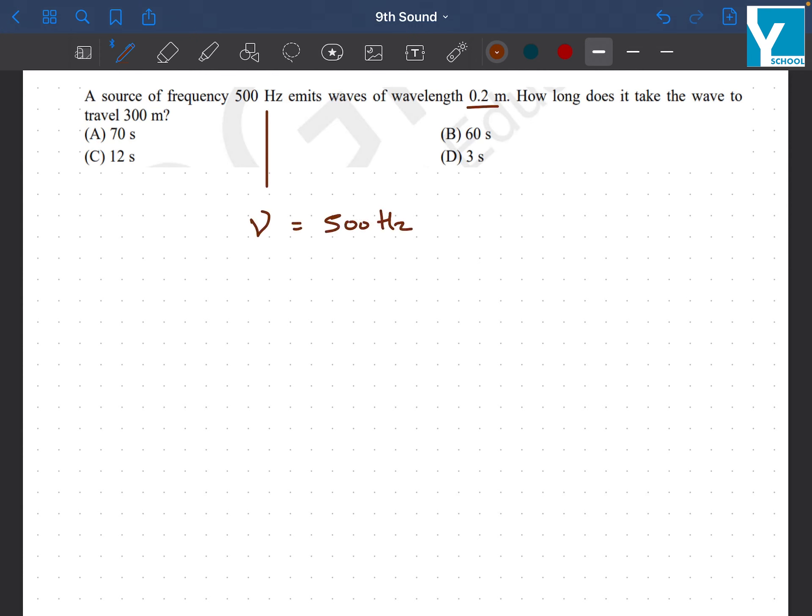So velocity can be written as lambda upon t or lambda into nu. Here lambda is equal to 0.2 and nu is 500 Hertz. So this will come out to be 100 meters per second.